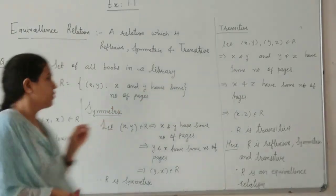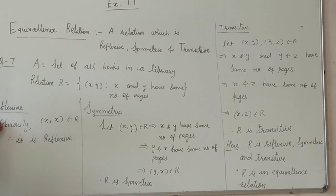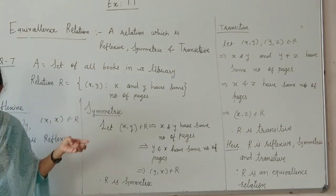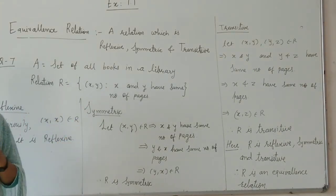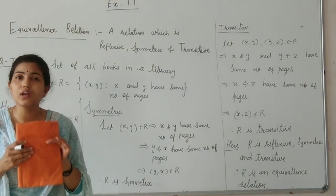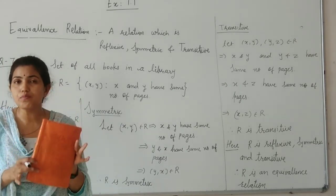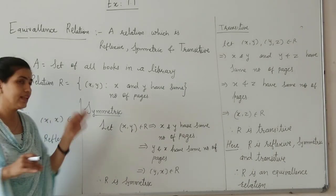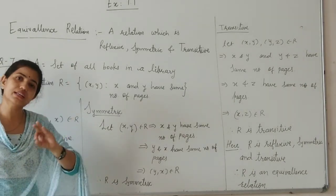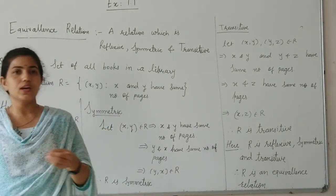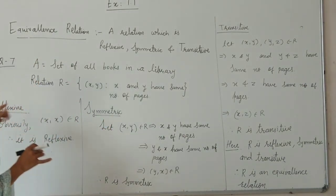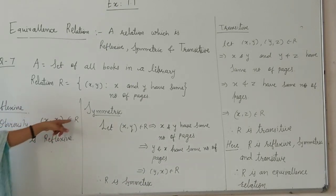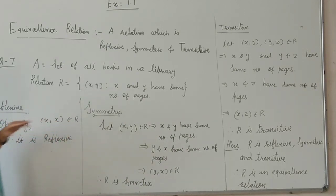First, reflexive. Obviously, (X, X) belongs to R, because if you have the same book, that book has the same number of pages as itself. If you consider one book, that book has the same number of pages as itself. Therefore (X, X) belongs to R. Therefore it is reflexive.